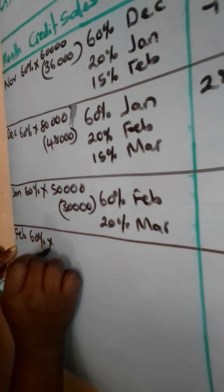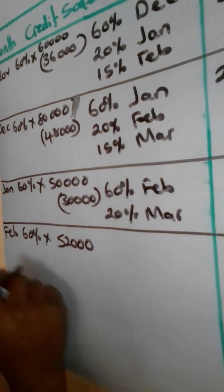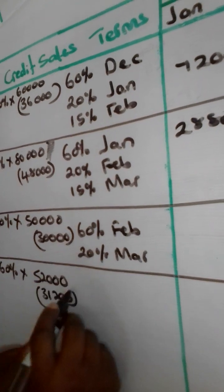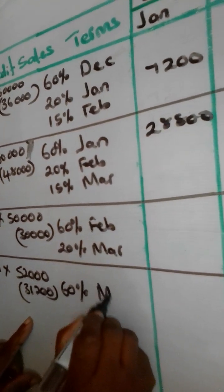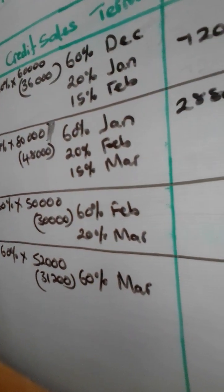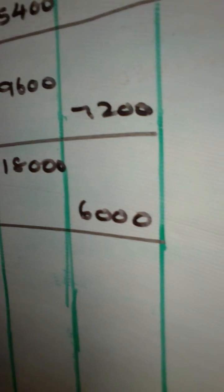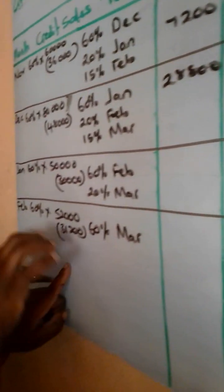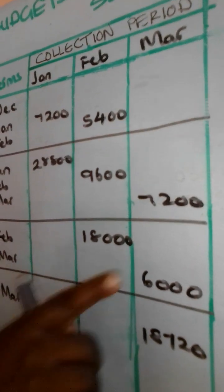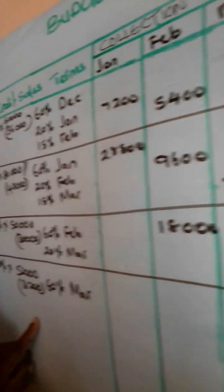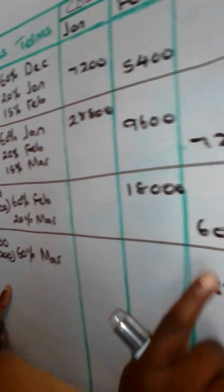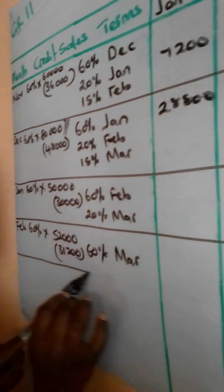For February: total sales are 52,000, so credit sales = 60% × 52,000 = 31,200. One month from February is March: 60% × 31,200 = 18,720 collected in March. Two months from February is April, which is outside our budget period. So from the February transactions, we only collect 60 percent within our budget period — the 18,720 received in March. We are done with February.